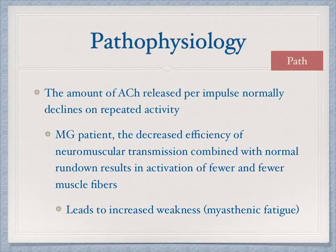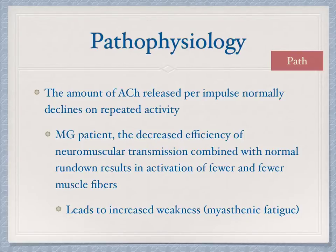In myasthenia gravis patients, the already-decreased efficiency of neuromuscular transmission combined with this normal rundown — losing acetylcholine because of rapid firing — results in activation of fewer and fewer muscle fibers. This leads to increased weakness, or what we call myasthenic fatigue.